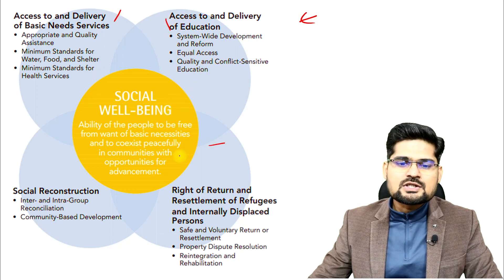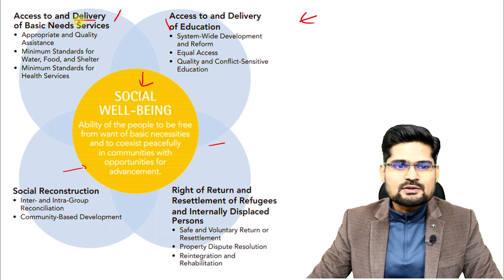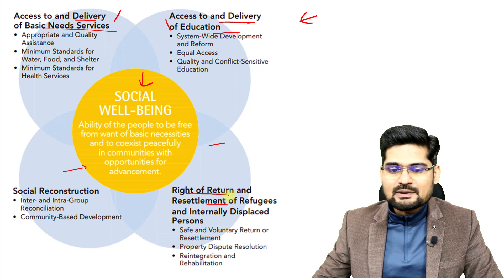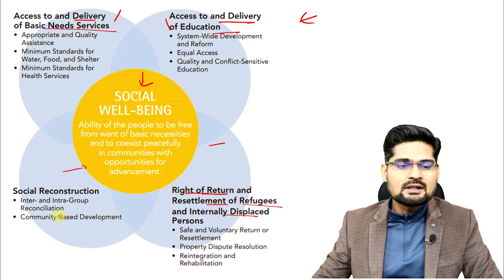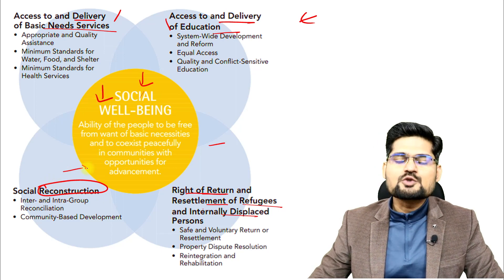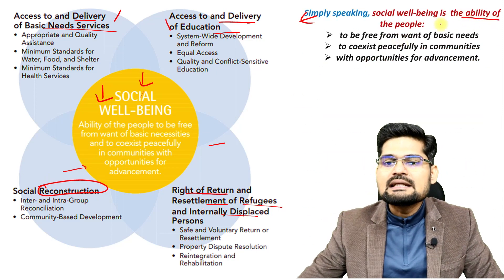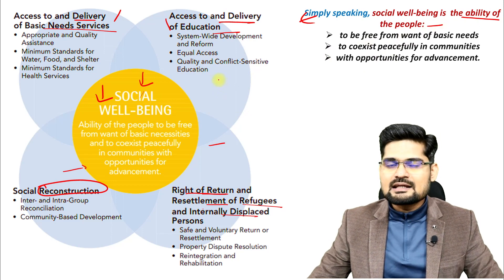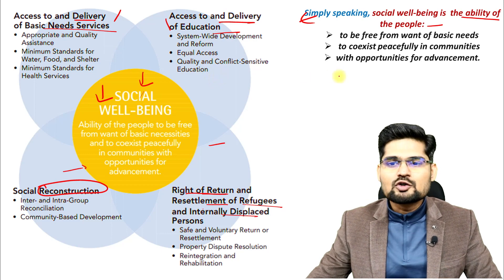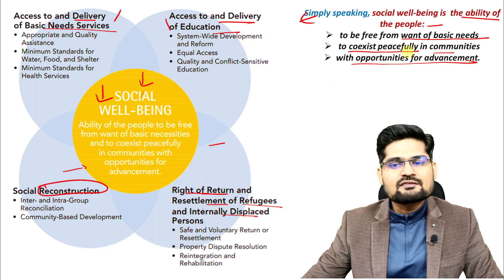There are several subsystems which overlap and create social well-being status. The four components are: access to delivery of basic needs and services, access to delivery of education, the right of return or resettlement of refugees and internationally displaced people, and social reconstruction. In simple terms, social well-being is the ability of people and communities to be free from want of basic needs, to coexist peacefully, with opportunities for advancement.